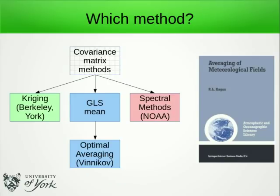This highlights two issues. When using a naive average, adding more data can make things worse, so throwing away data can make things better. Generalized least squares — or optimal averaging — guarantees that adding more data never makes things worse, and is always better than the naive average. This isn't a new result: it is based on work originally done by Ruvim Kagan in Russia in the 1970s, who developed a method called optimal averaging, which was used in a global temperature dataset by Vinnikov — now discontinued. The generalized least squares mean discussed here is a simplification of that method.